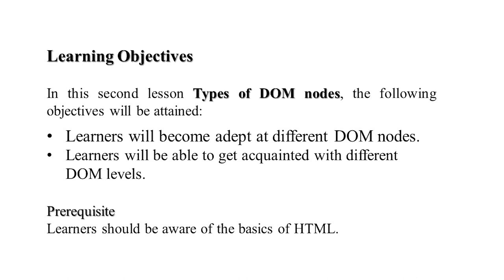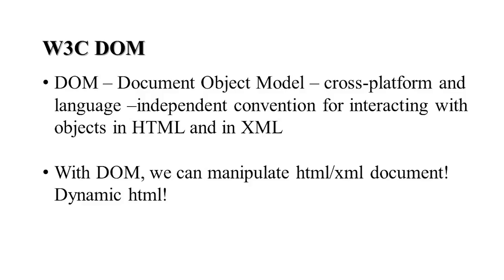Earlier you must have gone through the basics of HTML and what is document object model. It is a DOM object model which is a cross-platform and language independent convention for interacting with objects in HTML and XML. As we discussed in the previous video, it is not possible for JavaScript to directly access an HTML document — it does so only through the DOM, that is, document object model. With the DOM we can manipulate HTML, XML documents and dynamic HTML.